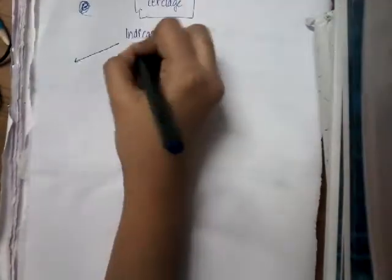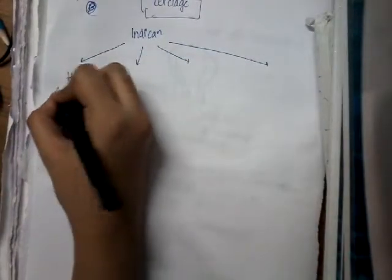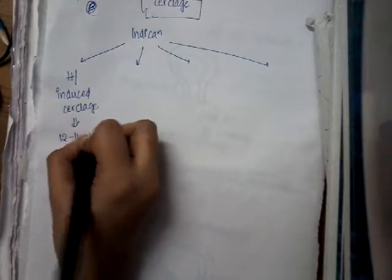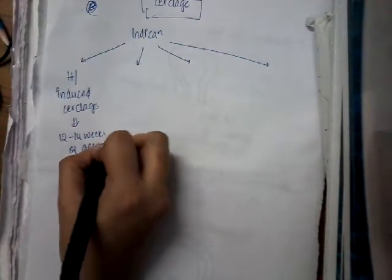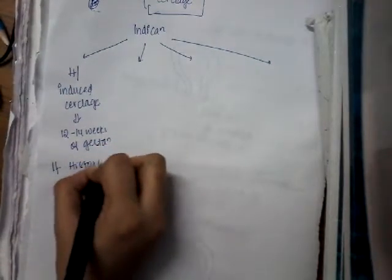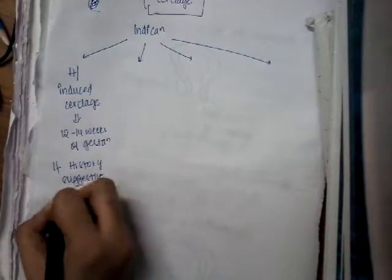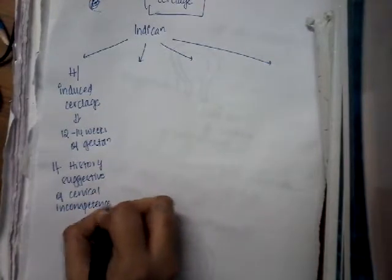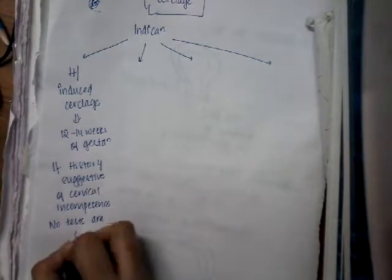For treating cervical incompetence, we do a cerclage. There are different types of cerclage available. The indications of cerclage are classified into four types. The first is history-indicated cerclage, done for women between 12 to 14 weeks of gestation, where the history is suggestive of cervical incompetence. Only based on history, we give cerclage treatment — no tests are done here.